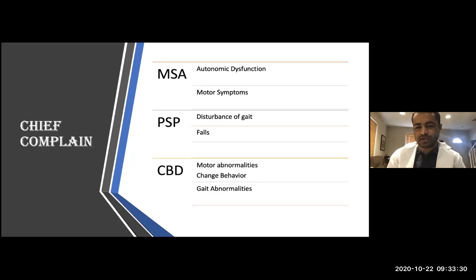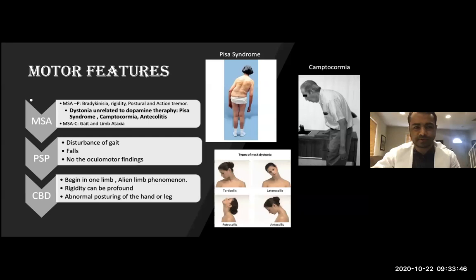Imagine a drunken person on a boat. The main problem in PSP is that patients fall a lot. Corticobasal degeneration, as I said, is mainly a behavioral problem, but patients have other interesting symptoms as well.